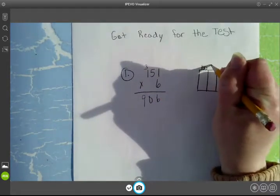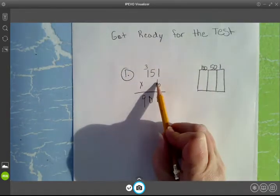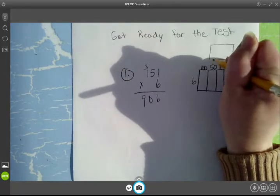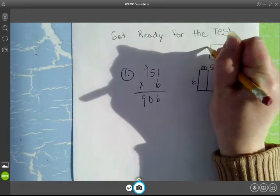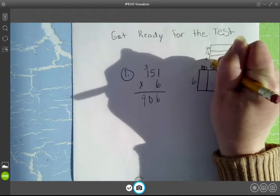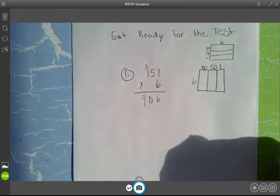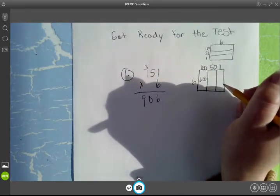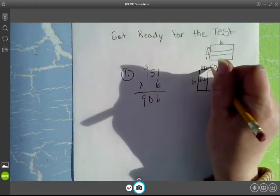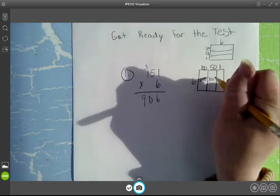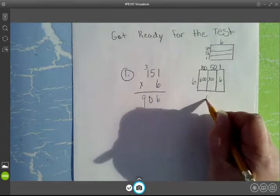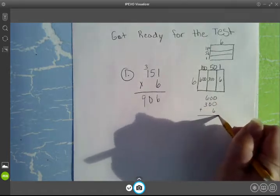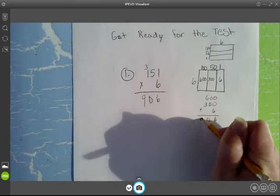151, 151 times 6. Again, you could write this 151 times 6 and put your answers this direction as well. 600, 6 times 5 is 30, plus my 0, 300, and 6. When I add 600, plus 300, plus 6, I get 906.